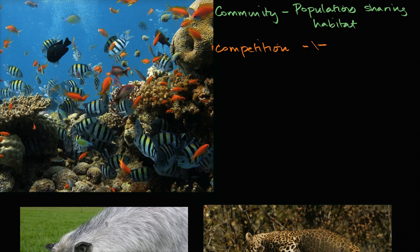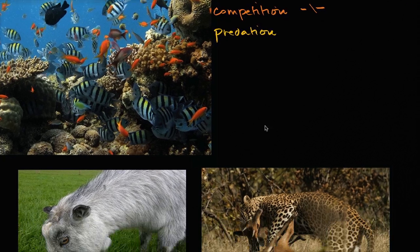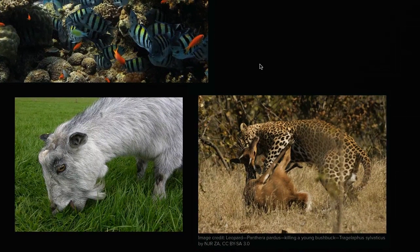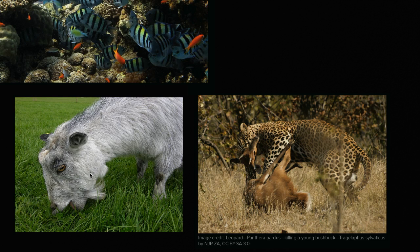The next form of inter-specific interaction is predation. This is when one population eats another population. You might associate predation with documentaries showing a cheetah hunting a young bushbuck. But this is not the only form of predation. This picture of a goat eating grass is also predation — it's not as bloody and violent, but it is still predation, because you have one species eating another species.